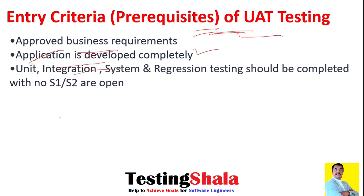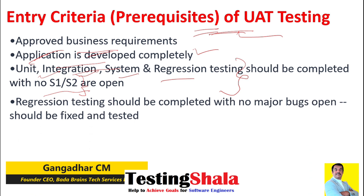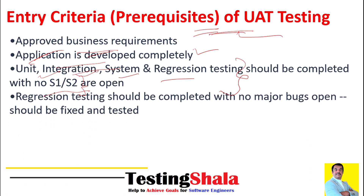The third criteria is that all testing — such as unit testing, integration testing, and system regression testing — should be completed. Once all the testing is done and all defects are closed, meaning no severity 1 and severity 2 defects are open, then UAT testing can start.